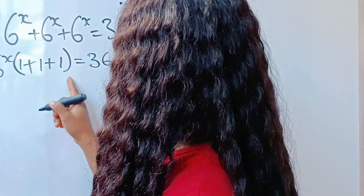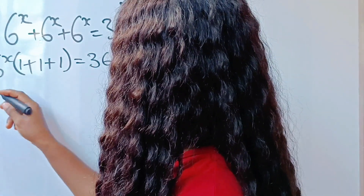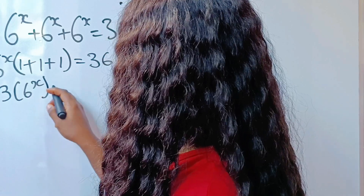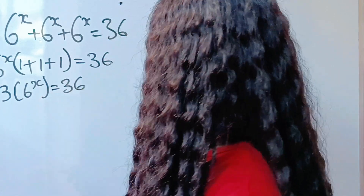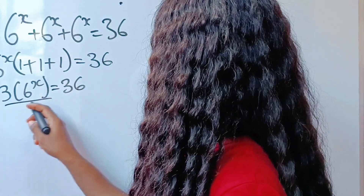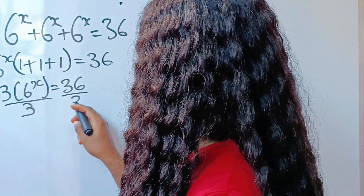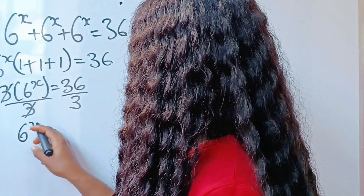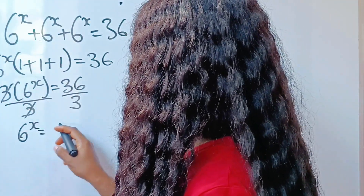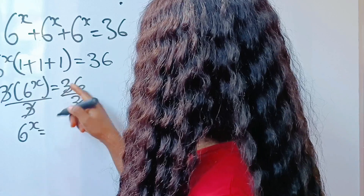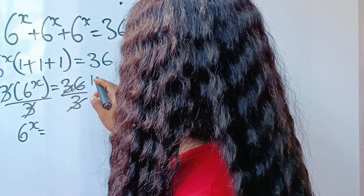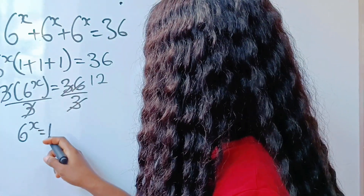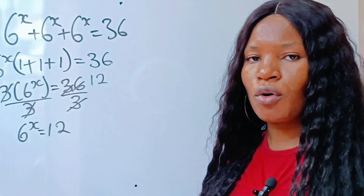When this is divided by itself, you have 1. So what does this mean? This simply means 6 cubed multiplied by 6 to the power of x is equal to 36. Now let's divide through by 3. And we have 6 to the power of x is equal to 12.